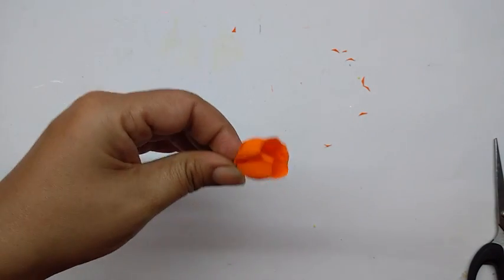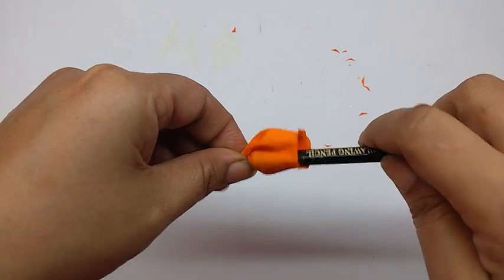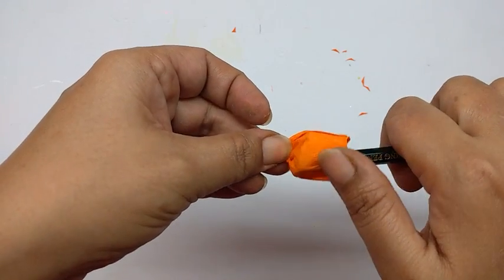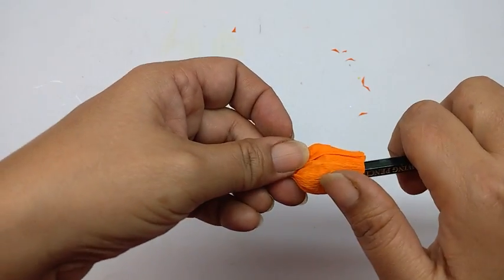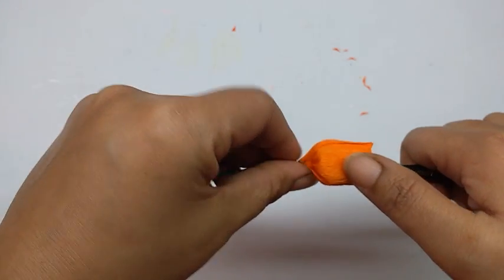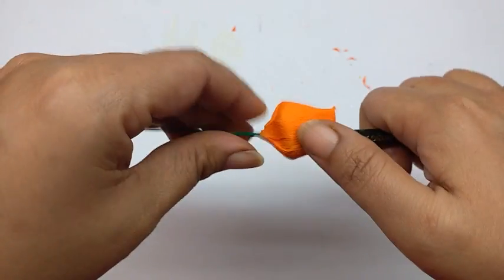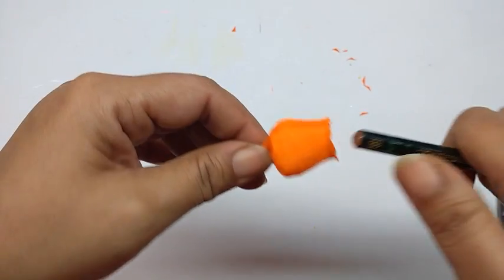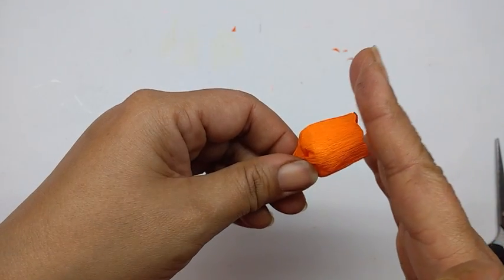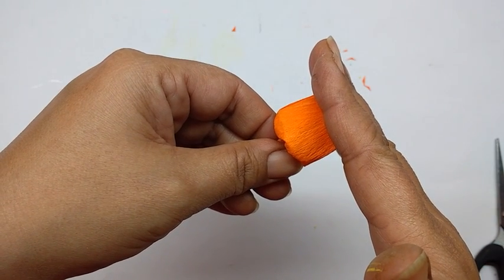Now holding the bottom so that it sticks, take a pencil, the base of the pencil, and push the paper out. Then just press it from the top and count to like 10 so that it holds its shape.